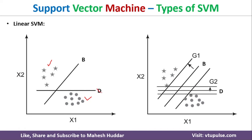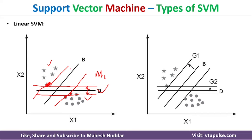For hyperplane D, the nearest points on each side become the support vectors. We draw parallel lines through these support vectors, parallel to the hyperplane, and calculate the distance — call it m1. We do the same for hyperplane B: identify support vectors, draw parallel lines, and calculate margin m2. Comparing m1 and m2, if m2 is larger, then B is the better hyperplane, dividing the dataset into two classes.